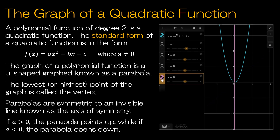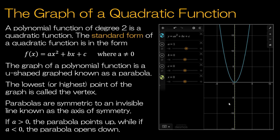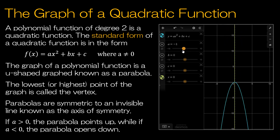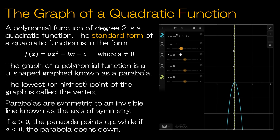I'll make that dotted so we can see this is not a line we would normally see — just a dotted line showing the axis of symmetry, which means I could fold the parabola across that axis. If a is greater than 0, the parabola points up. Notice I have a = 1. As I move to the negative side, it's now flipped over, and I can shrink it or stretch it.